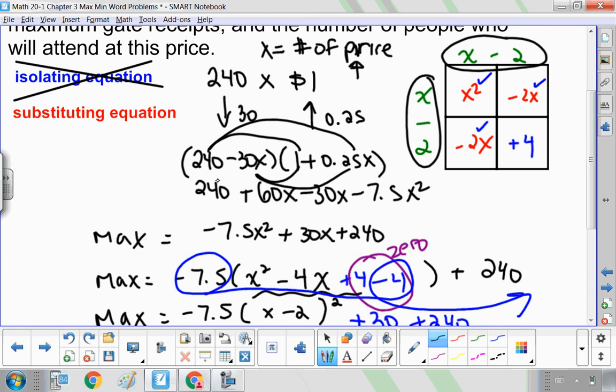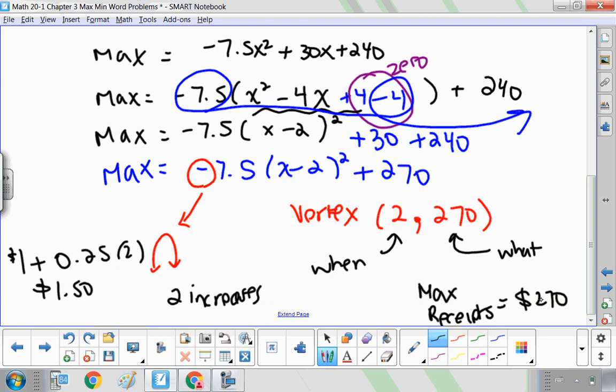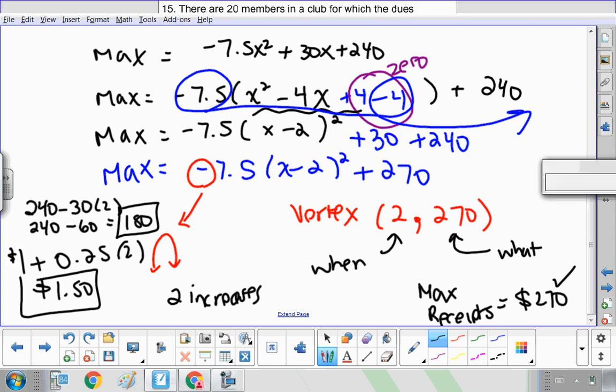Over here, 30 less people are going to attend. So I'm going to have 240, take away 2 multiples of 30. So that's 240, take away 60, it's 180. So you're going to have 180 people attend, and those people will pay $1.50. So 180 people attending at $1.50 each would give you a maximum revenue of $270. So let's look at that all together here.